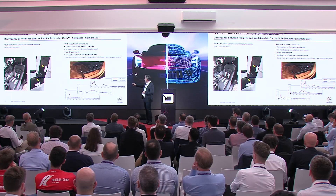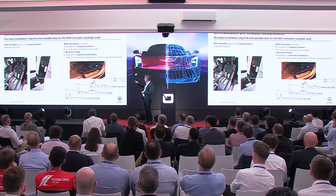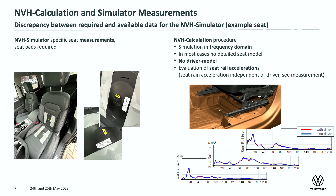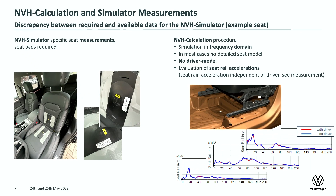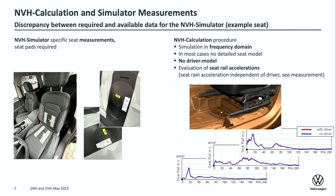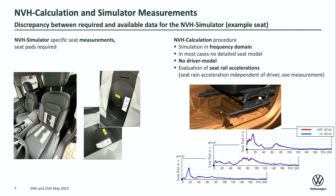Why are we using seat rail vibrations? Because they are mainly unaffected by the driver — whether a driver sits in the car or not, you get nearly the same vibration. This is shown on this slide: measurements with the driver and without the driver on the seat show the values are nearly the same. So it's quite okay to use seat rail vibrations without the driver in the trim body model.